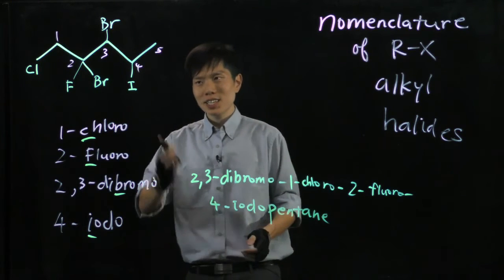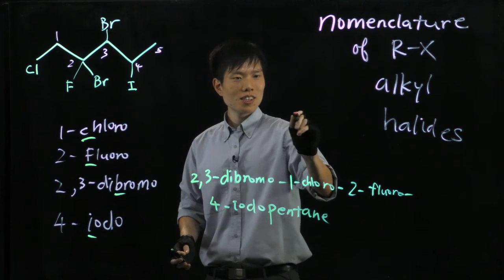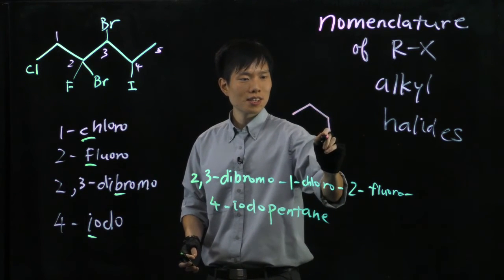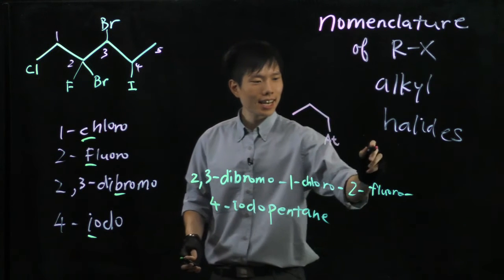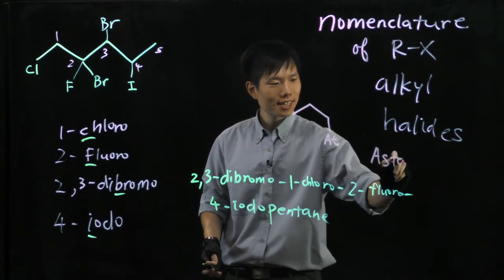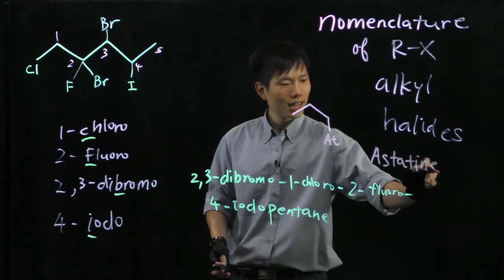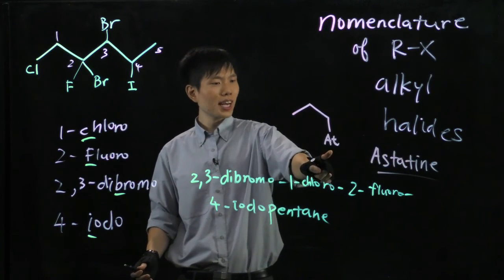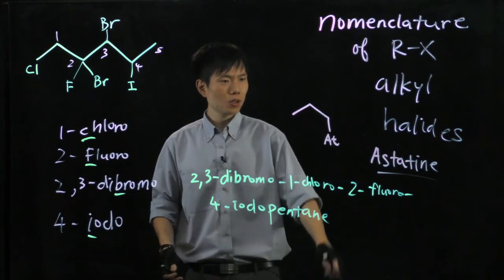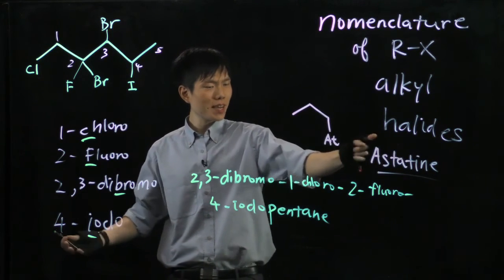Just a note. If somebody asks you to name this. At is astatine in the same group as all the other halogens here. This is weird because it's uncommon to be asked astatine. So how do we incorporate this into the name?